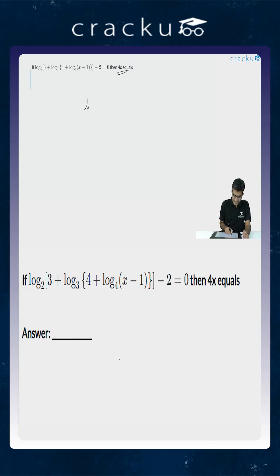If you are looking at the equation, log of the base is 2, 3 plus log of, now the base is 3, 4 plus log of the base is 4 into x minus 1, this is the argument. Minus 2 is equal to 0, this is equal to 2.